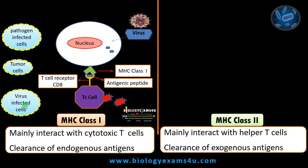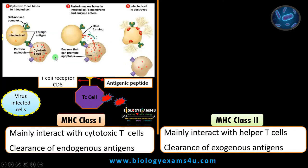Infected or tumor cells process antigen internally and present it on MHC class 1, so they are easily recognized by cytotoxic T cells. Upon binding, cytotoxic T cells secrete perforins — proteins that create pores on the membrane of infected cells — along with granzymes, which are digestive enzymes that cause the destruction and clearance of that infected cell from the system. The major function of MHC class 1 is therefore the clearance of endogenous antigens.